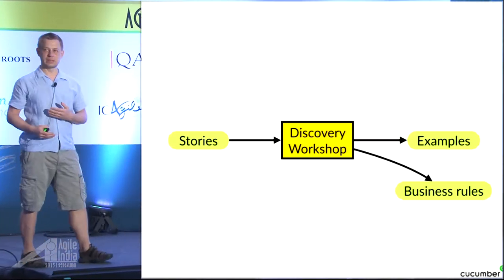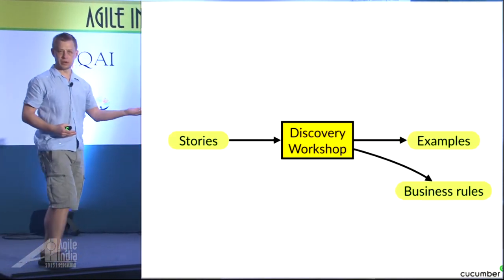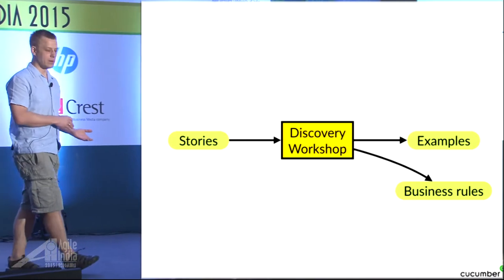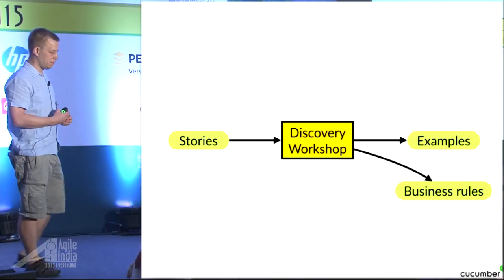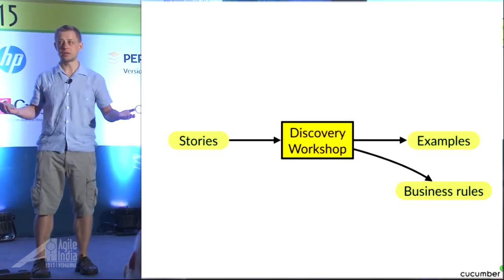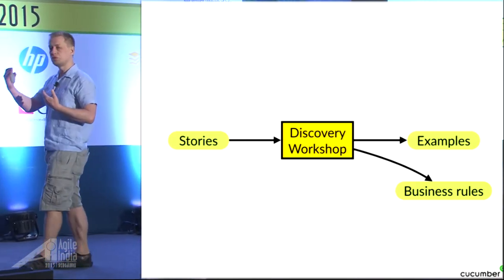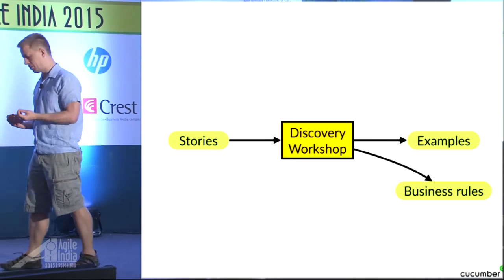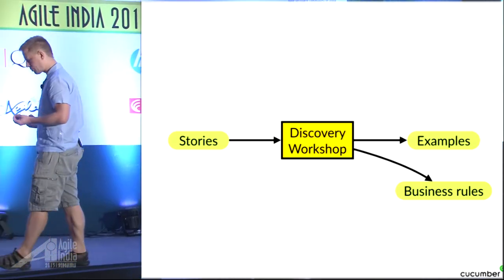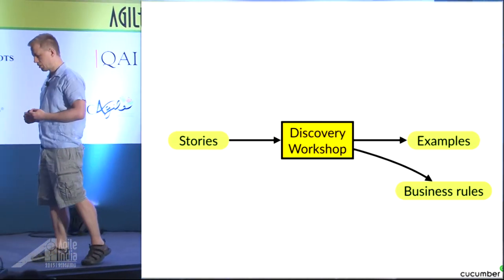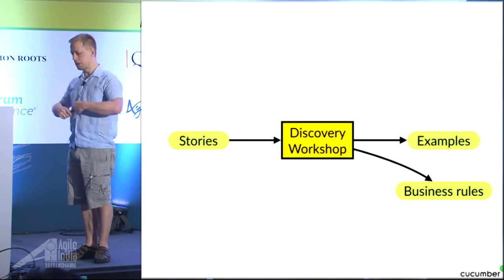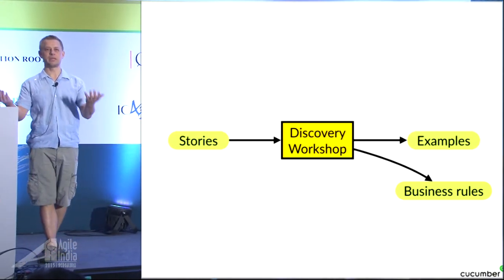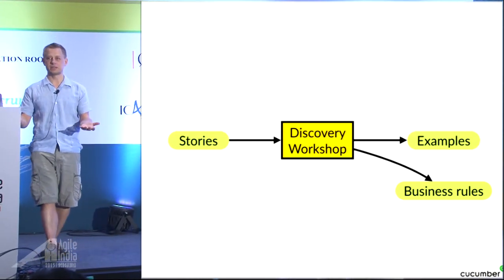You will realize that the rules you already knew about were ambiguous, unclear, or contradictory. But as soon as you start talking about concrete examples, people can visualize it. People can see where it's inconsistent.